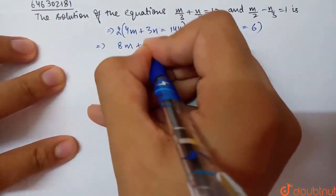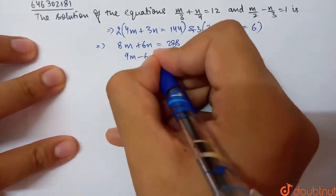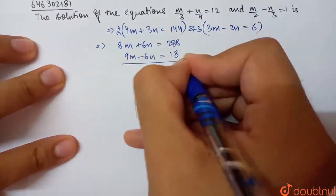So, this becomes 8m + 6n = 288. And this becomes 9m - 6n = 18. Okay, so the 6n terms cancel out.